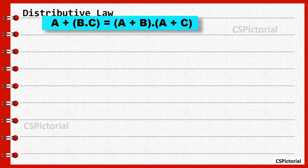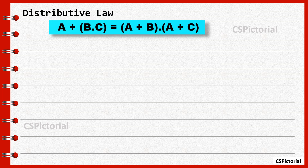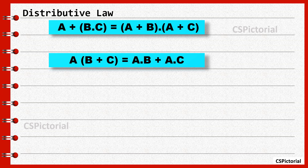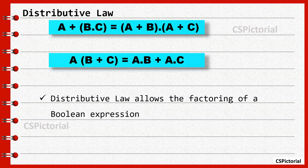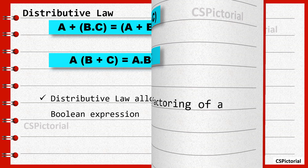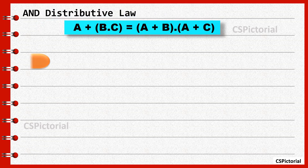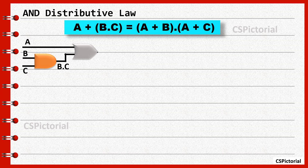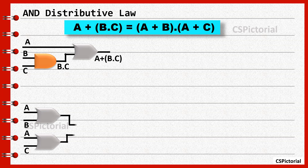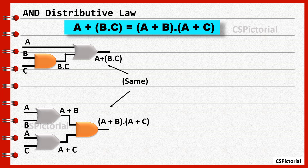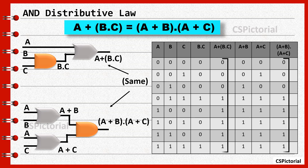Distributive law. A plus B dot C is equal to A plus B dot A plus C. A times B plus C is equal to A dot B plus A dot C. The distributive law allows the factoring of a Boolean expression. AND distributive law: the inputs B and C are given to an AND gate; the output B dot C is then ORed with input A, so the output is A plus B dot C. The inputs A and B are given to one OR gate and inputs A and C to another OR gate; the outputs A plus B and A plus C are then ANDed together, so the output is A plus B times A plus C. These two outputs are the same as proved in the truth table.